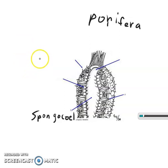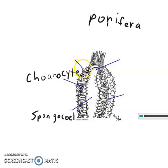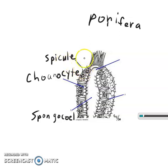Next up we have the choanocyte. One of my favorite parts is the spicule — this helps protect the sponge from different organisms. It also looks kind of like a jack when you look at it under a microscope; it's a pretty neat structure.